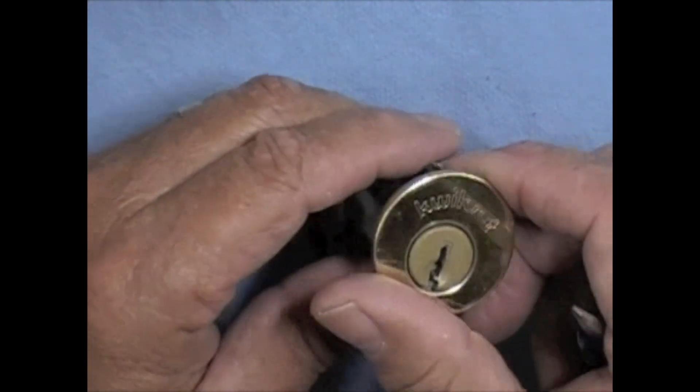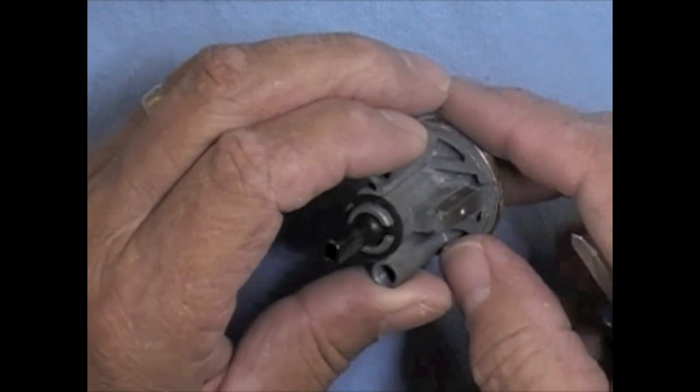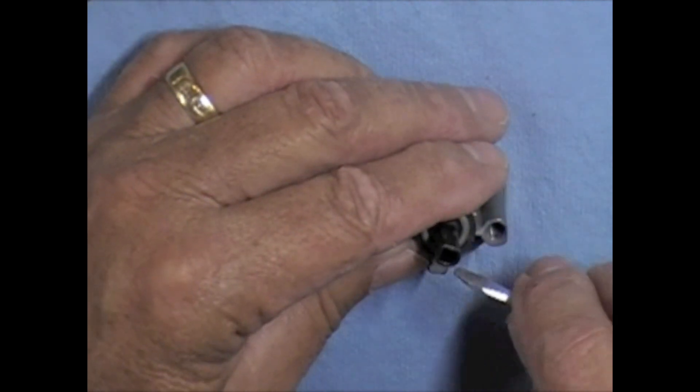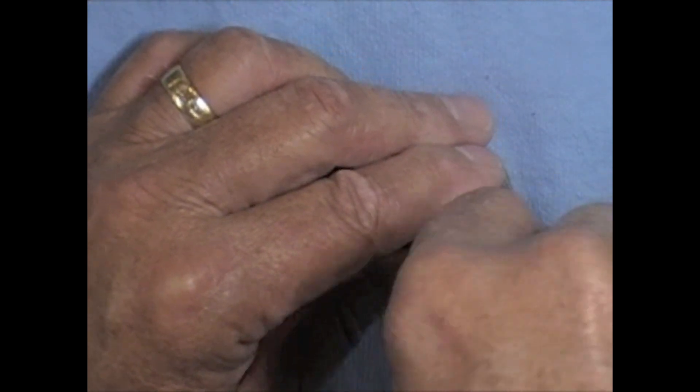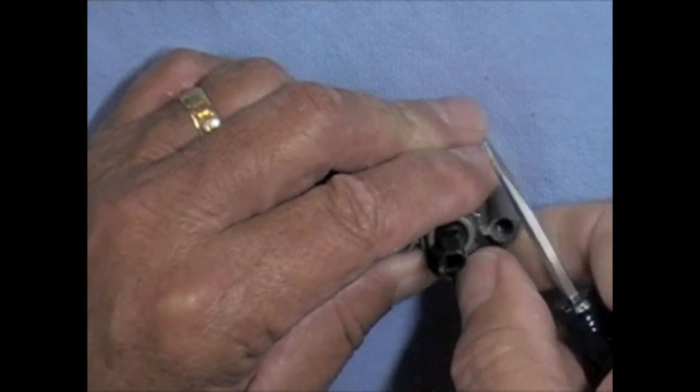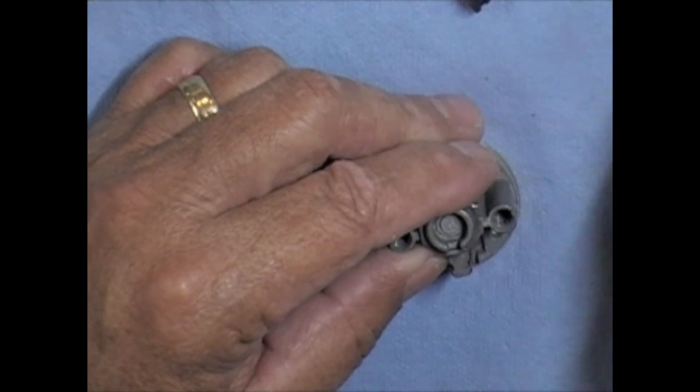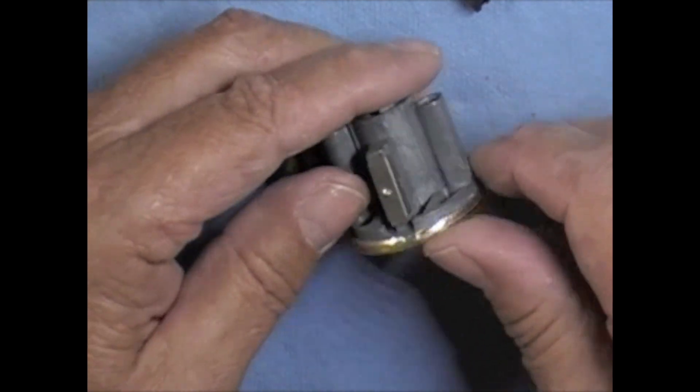If you don't have a Kwikset you can use a different type of lock, of course, but this again is a deadbolt that has the standard tailpiece on it. We want to take the tailpiece off and put that aside. Just line your parts up like you always do so you don't lose any of them.